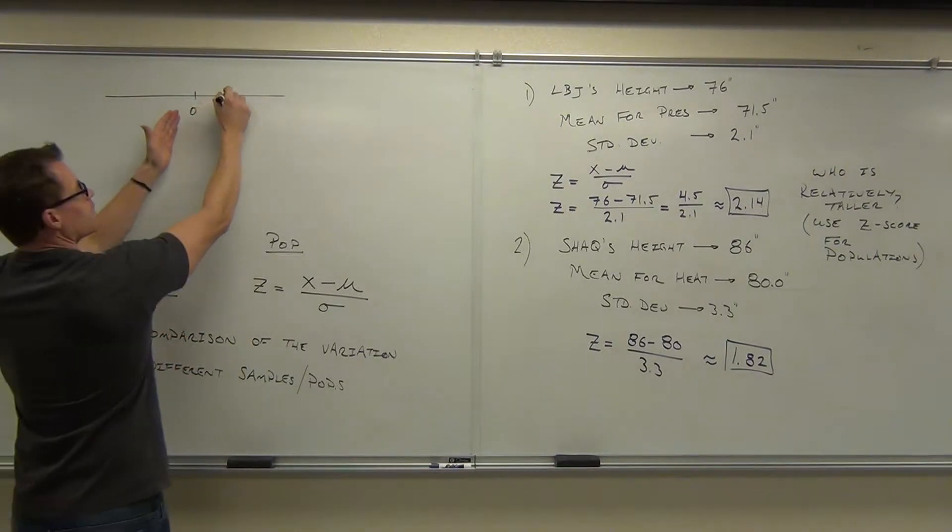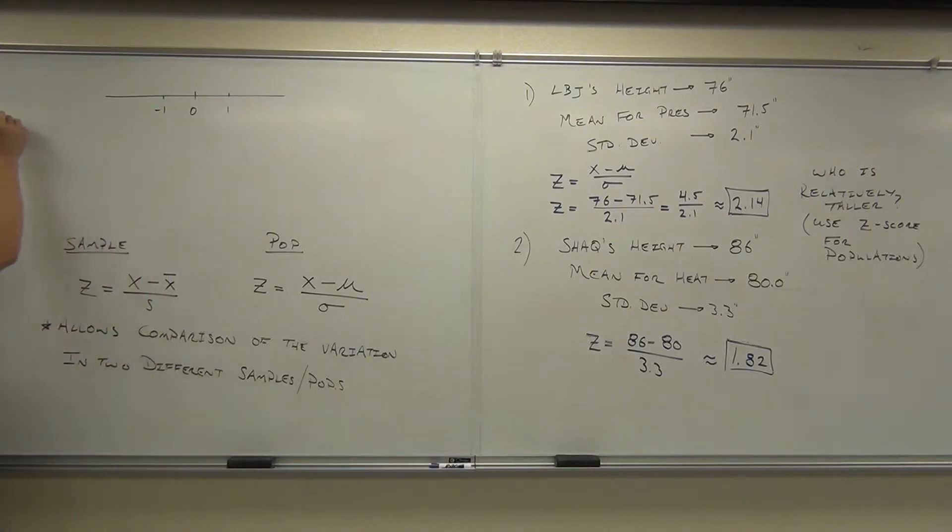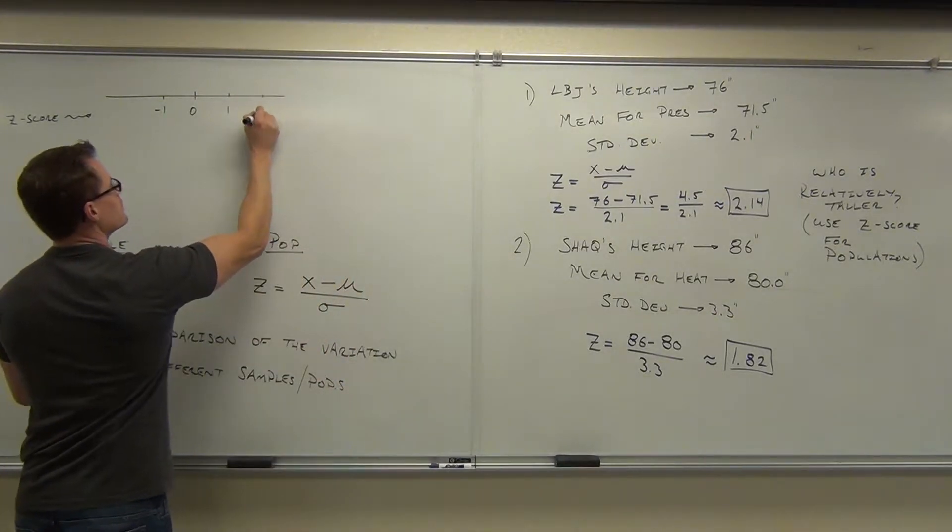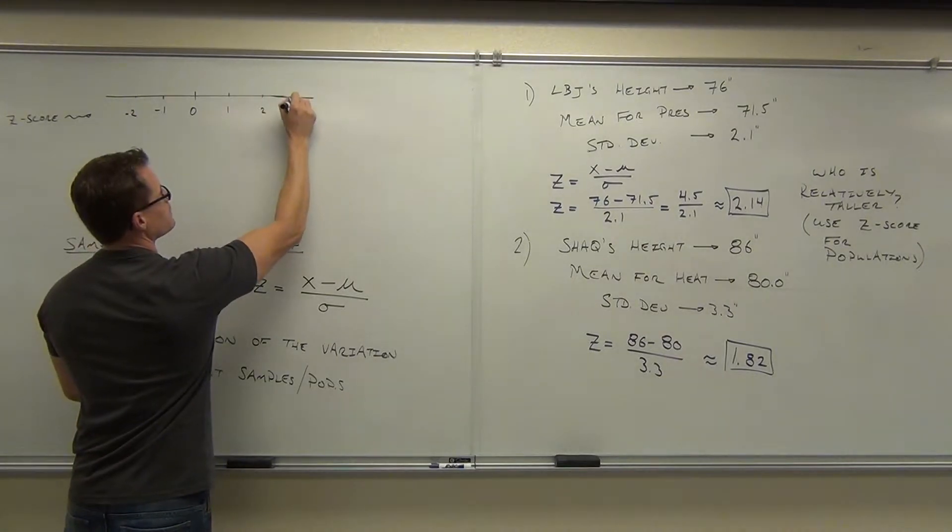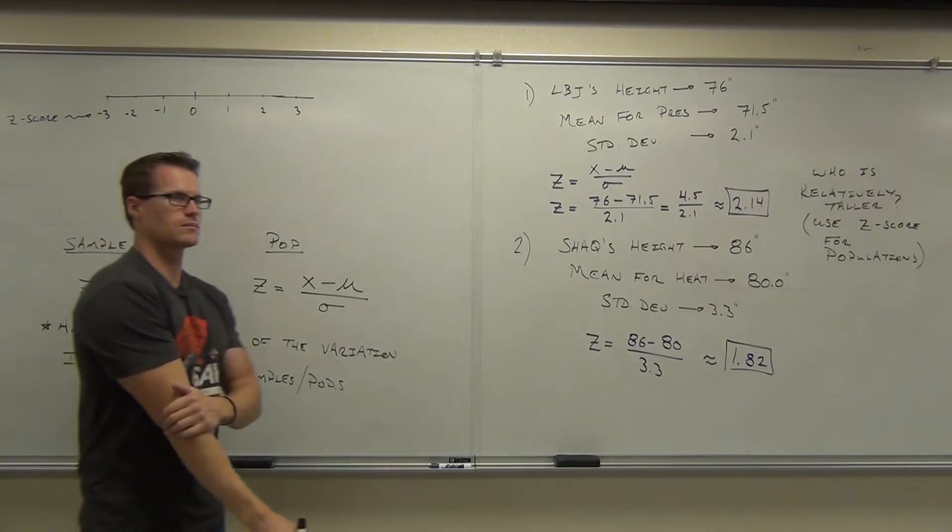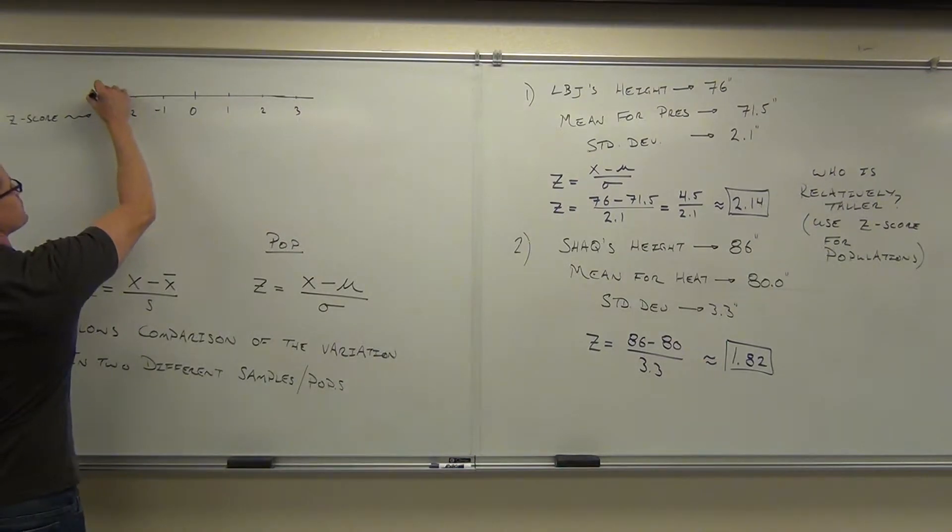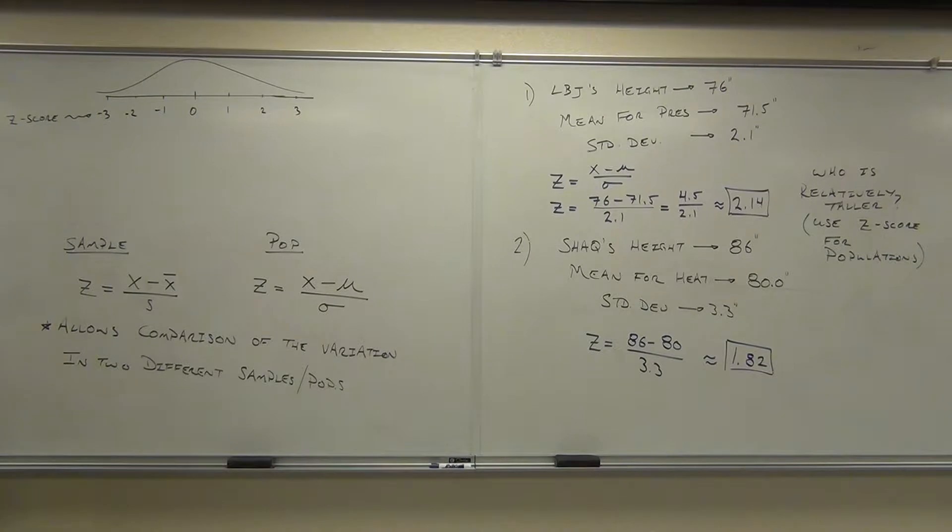Right here you get 71.5 minus 71.5. Are you with me on that? What would you get there? Zero. So a Z score at the mean is zero. So in the middle of our data, we get zero. If you go over one standard deviation, that's a Z score of one or negative one.